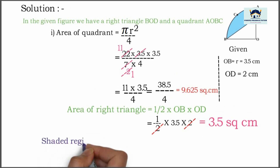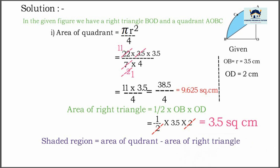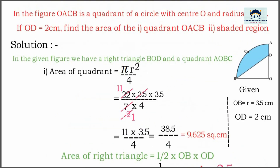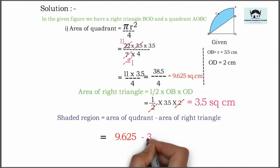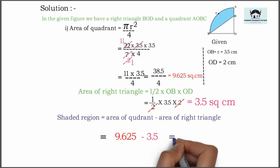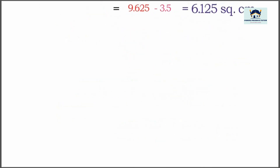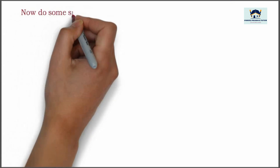Now we will find the shaded region, which is equal to area of quadrant minus area of right triangle. We already found these two values. Substituting: area of quadrant is 9.625 minus 3.5, which is equal to 6.125 square centimeter. Now do some similar problems.